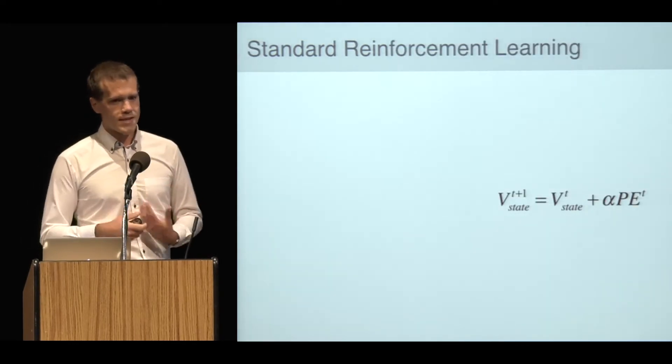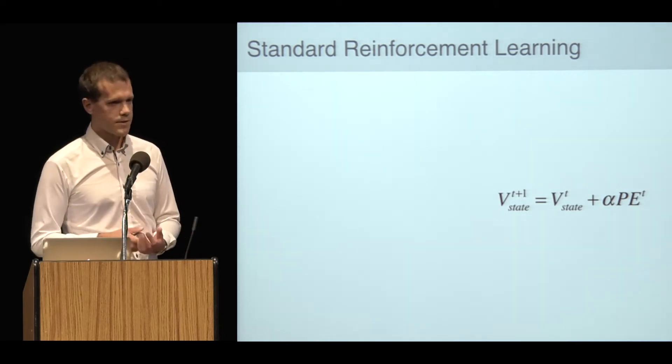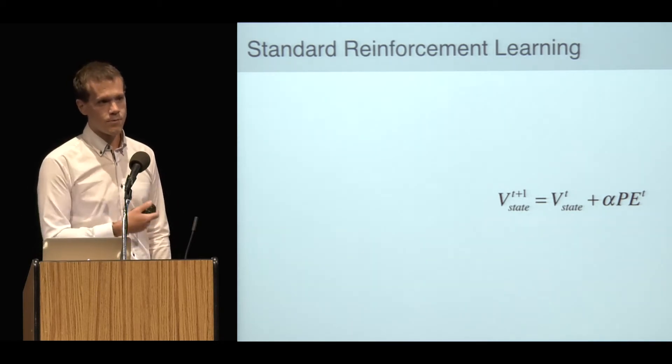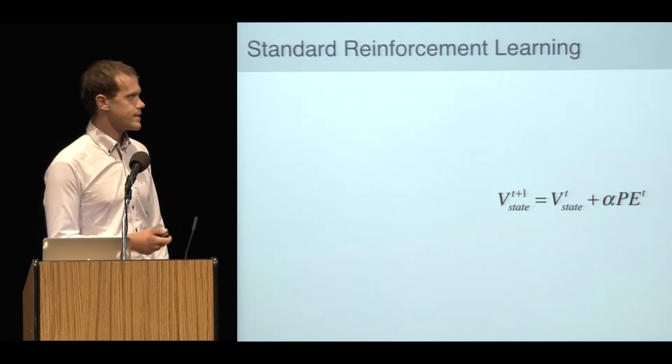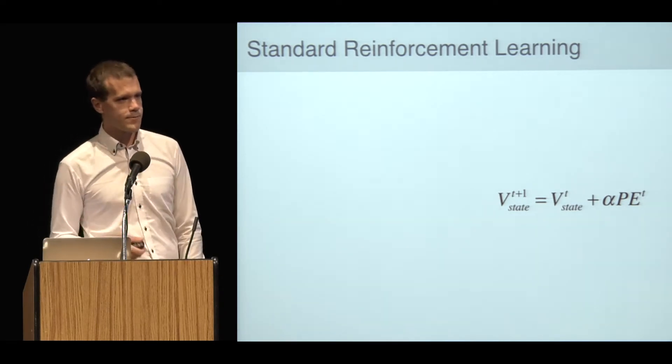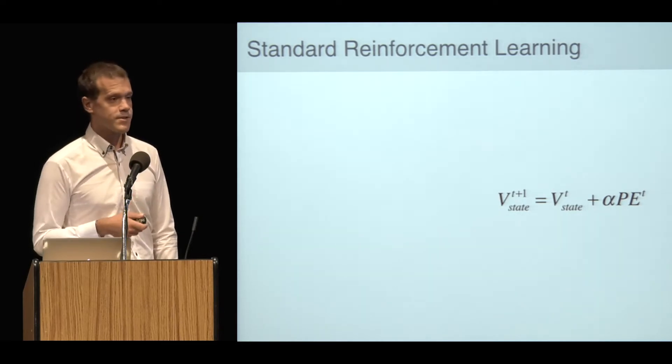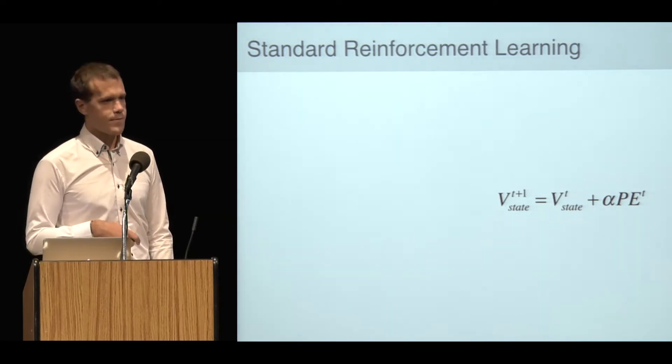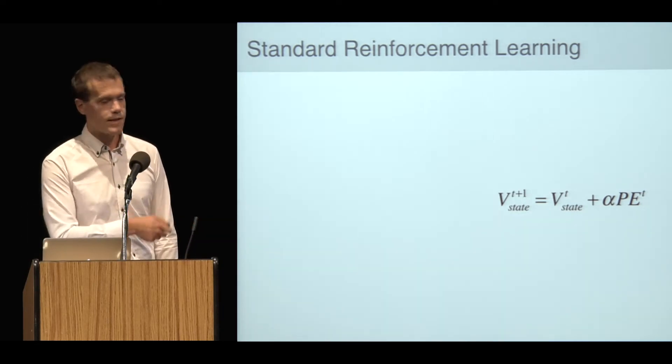The way I'm going to try to understand behavior on this task is using a reinforcement learning model. This model is learning values which correspond to the probability that a target will appear for each of the stimuli. The basic idea is that higher values means higher probability of target, which means that the reaction time should be faster. I'm going to fit the parameters of this reinforcement learning model jointly with a parameter of a regression model relating values to reaction times.